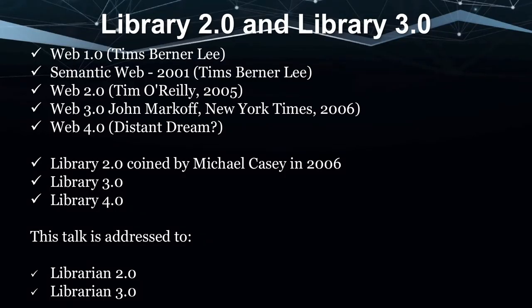Parallel to Web 1.0, 2.0, and 3.0 is Library 1.0, Library 2.0 — coined by Michael Casey in 2006 — Library 3.0, and Library 4.0. Essentially, Web 2.0 applications applied to libraries are called Library 2.0. Web 3.0 technologies applied to libraries is Library 3.0, and likewise. This talk is addressed to librarians who are already advanced and have transformed their libraries to these advanced versions.